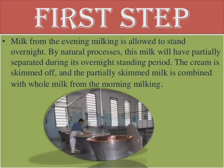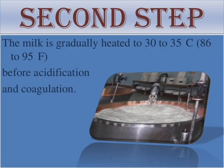The first step: milk from the evening milking is allowed to stand overnight. By natural processes, this milk will be partially separated during its standing period. The cream is skimmed off, and the partially skimmed milk is combined with all milk from the morning milking. The second step: the milk is gradually heated to 30 to 35 degrees centigrade before acidification and coagulation.